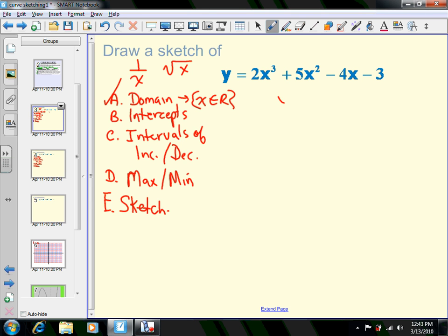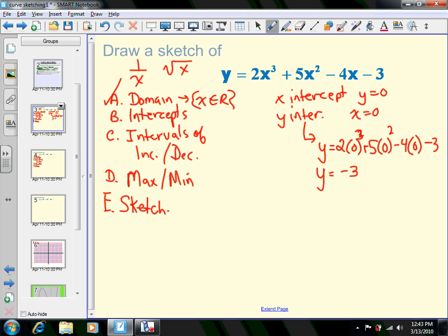To find our intercepts, if I want the x-intercepts, I set y = 0. If I want the y-intercepts, I set x = 0. That's by far the easiest to find. If you make x zero, you have 2(0)³ + 5(0)² - 4(0) - 3, so that answer is -3. My y-intercept is (0, -3).